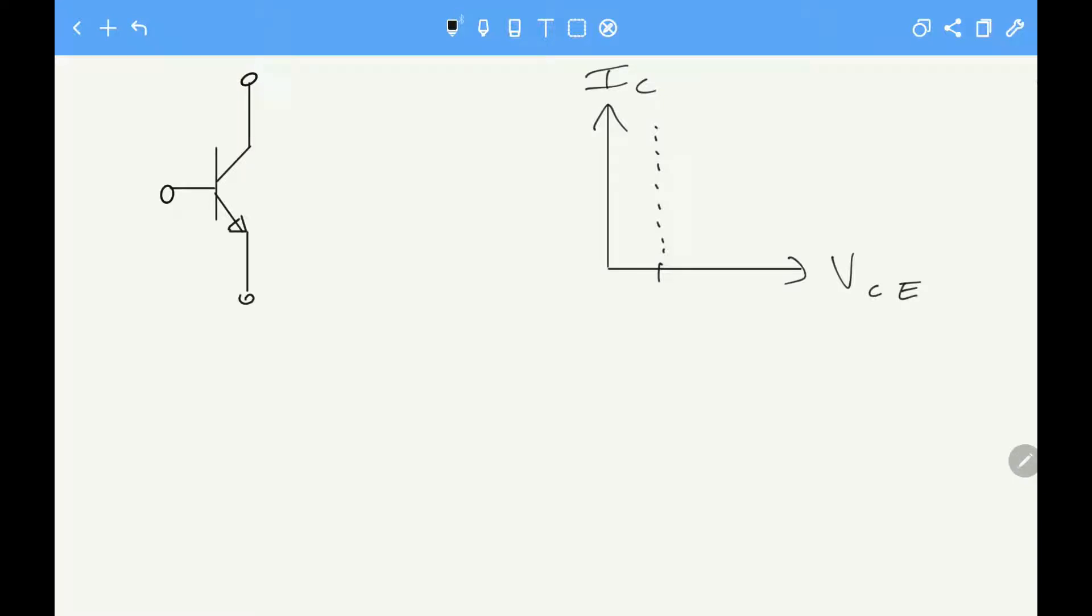Hello everybody, I'm back again with another video on electronics and this video will be on transistors. So on the left here you have an NPN transistor with a base, emitter, and collector, and if you look at the collector current versus the collector emitter voltage, you get curves like this.